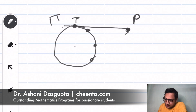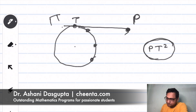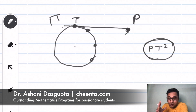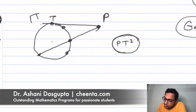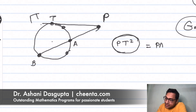Suppose the tangent touches the circle at point T. Then PT² is supposed to tell you how far the point P is from the circle gamma. Why is PT² such a good candidate? Because if you draw any secant from P — let's say PAB, a secant cutting through the circle — then we can show that PT² equals PA times PB.